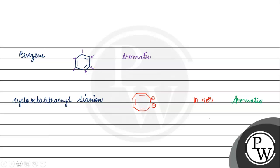And last thing, tropylium cation. So, again, this also has 6 pi electrons.